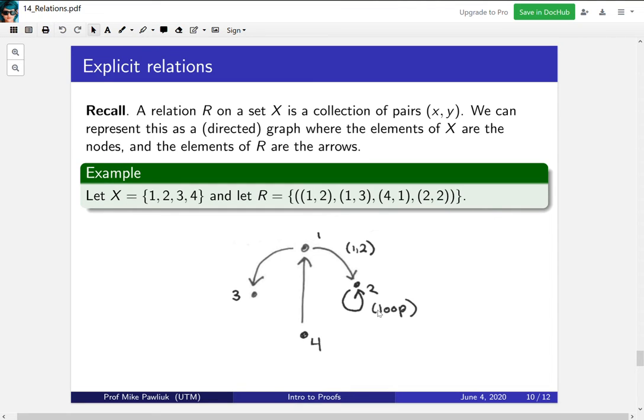Now let's look at how do we describe relations in a way that's visual, in a way that's easy to understand. So a relation R on a set X is a collection of pairs. One way to represent this is by representing it as a directed graph. That means that the elements of X are called the nodes, and the elements of R are the arrows. So this is a node and arrow representation.